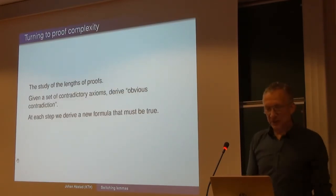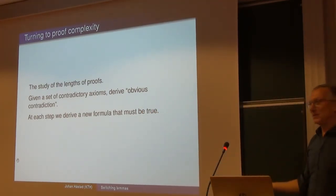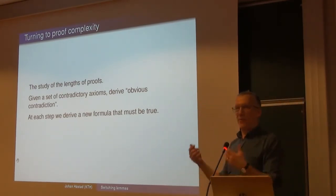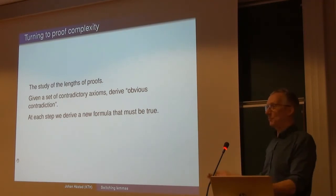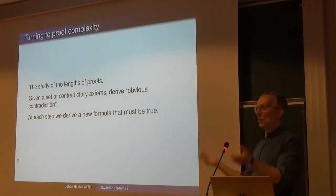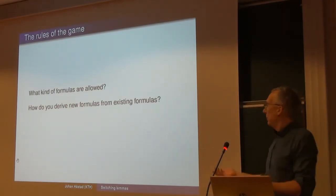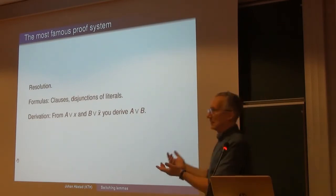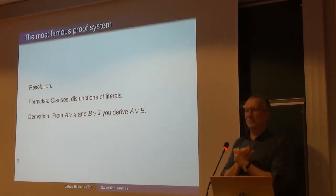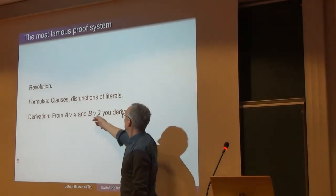Now for even more recent results involving more complicated switching lemmas — this happens in proof complexity. I'll give a crash course since I don't know how many of you are familiar. Proof complexity asks: given something, how long is the proof? What kind of formulas are allowed? The most famous simple proof system is resolution: you have a clause A OR X, another A-complement OR B, and you derive A — this is easy.